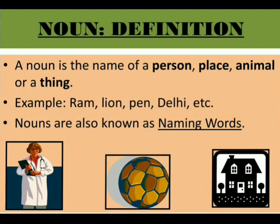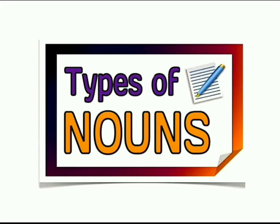The other name of noun is naming words. Nouns are also known as naming words. We call a thing by its name. So whatever name we give to things, animals or persons around us, we call that name a noun.